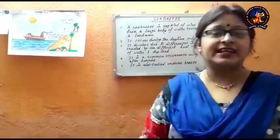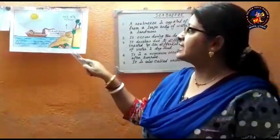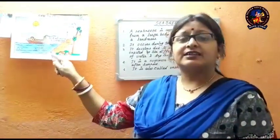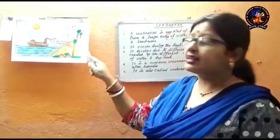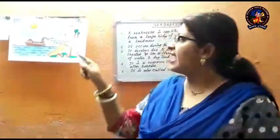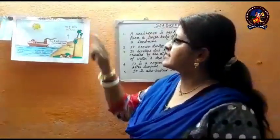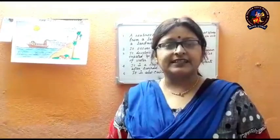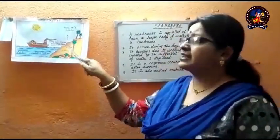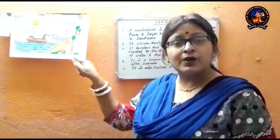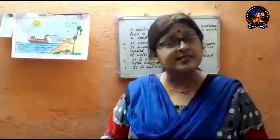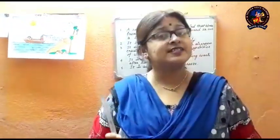During the daytime, the land gets warmer faster than the water. The air above the land becomes warm and rises up. Then the cool air from the sea moves in towards the land and takes its place. This is called sea breeze.